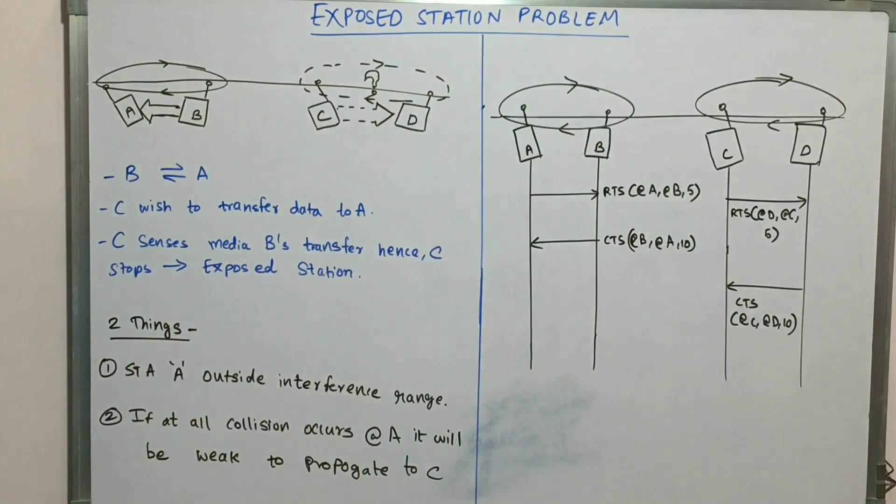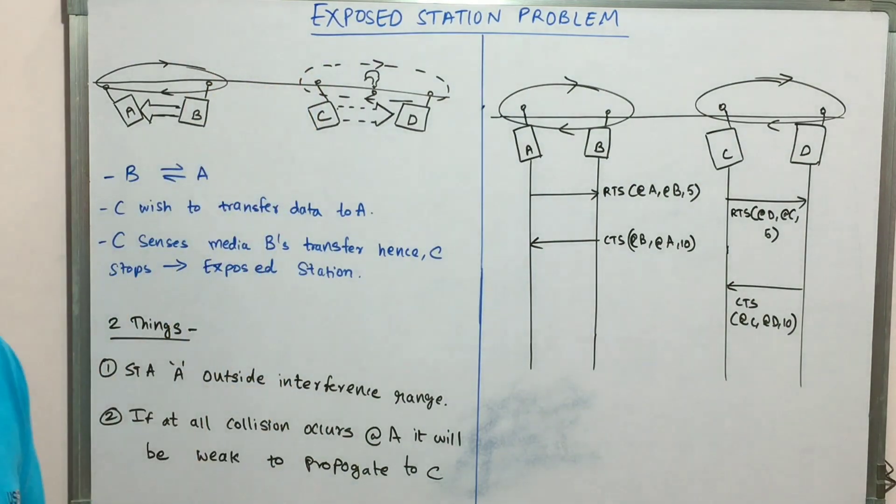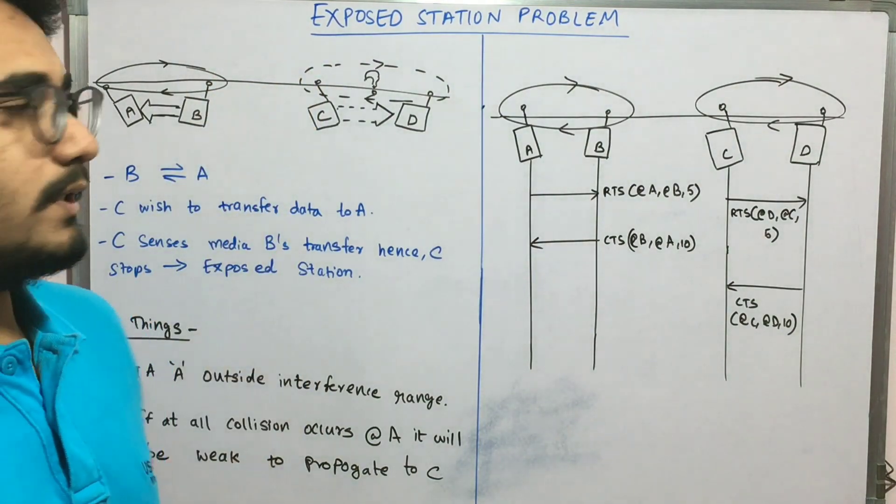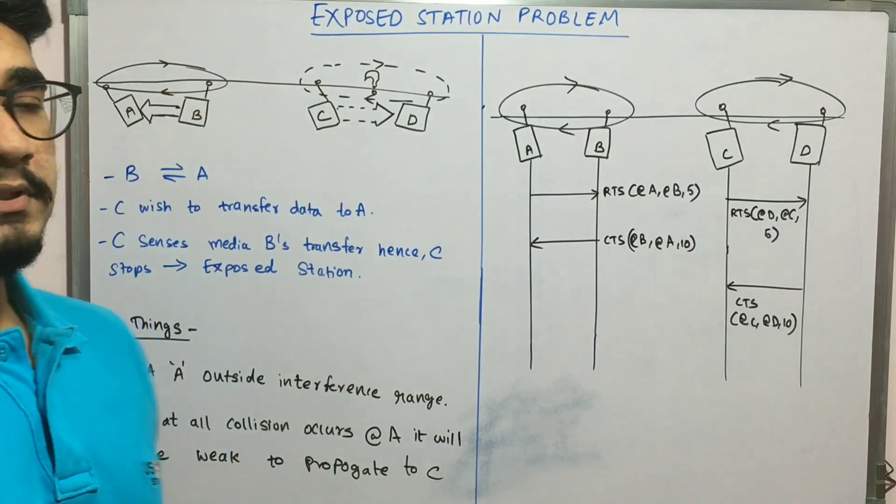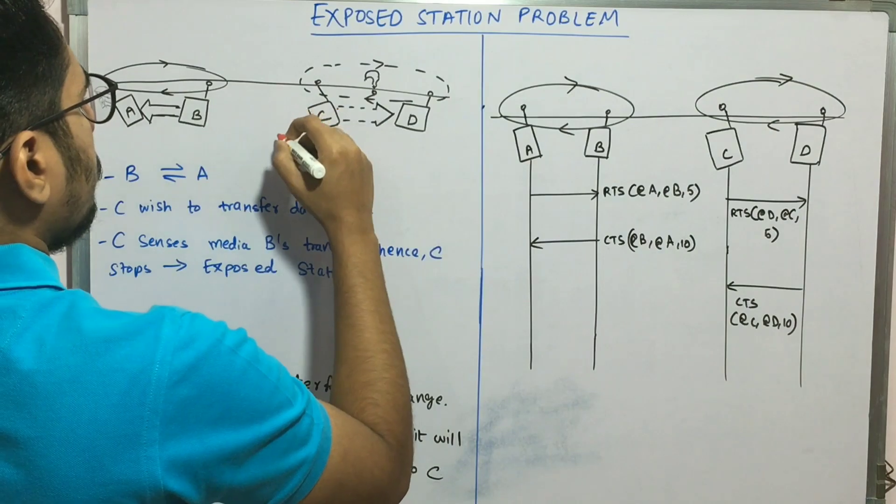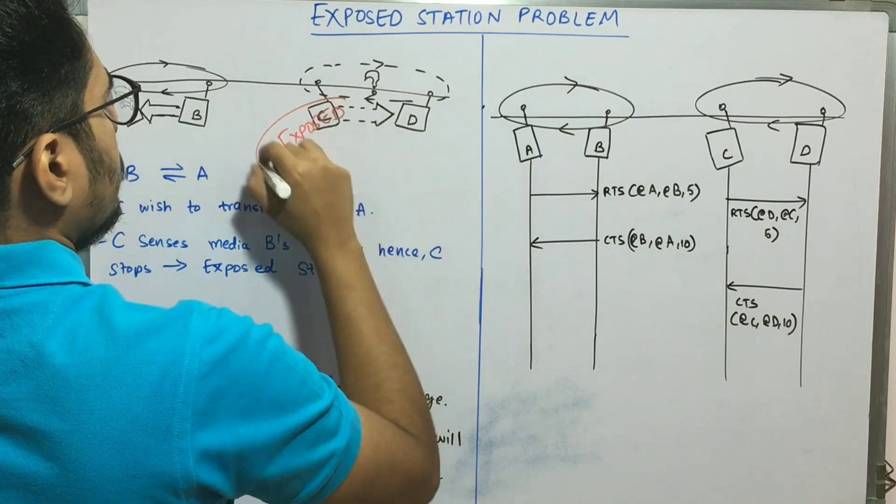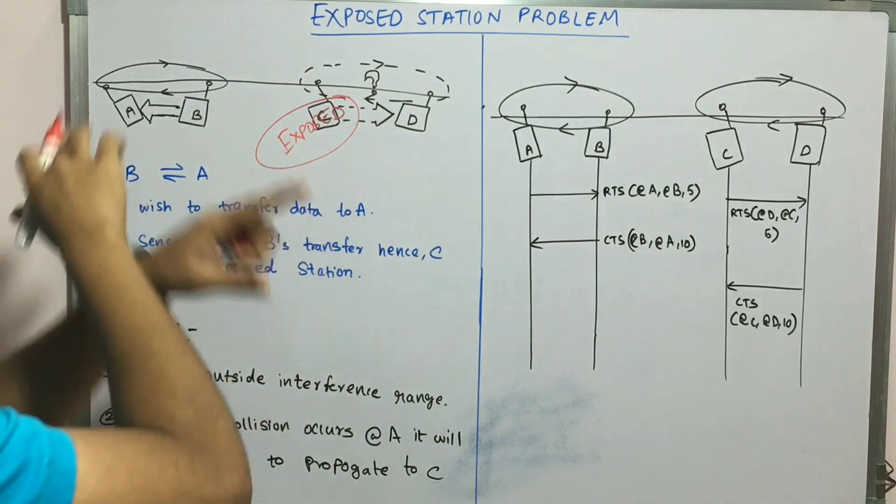Basically, he has to wait. That becomes a question mark whether it has to do the transmission or not. What happens is C gets stopped there and becomes the exposed station. He will become the exposed station in this scenario.